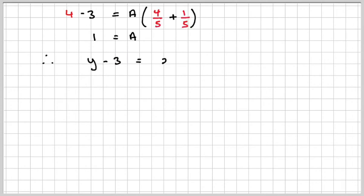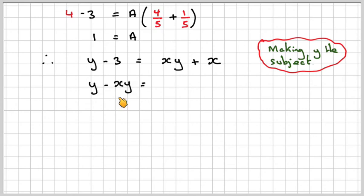We can substitute back into our equation. So it becomes y - 3 = xy + x. Bringing the terms with y on one side, we have y - xy = x + 3.